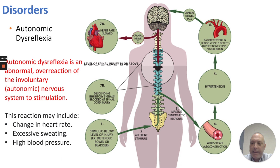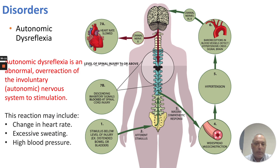Looking at a couple of disorders: autonomic dysreflexia is an abnormal overreaction of the autonomic nervous system to stimulation. It could involve spontaneous changes in heart rate, excessive sweating, and high blood pressure — overstimulation of the autonomic nervous system. This affects blood pressure, sweating, and the heart rate. It also causes vasoconstriction, which further increases blood pressure. With autonomic dysreflexia, hypertension is a common outcome.